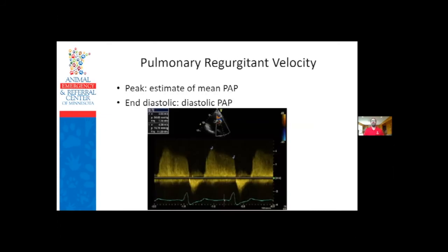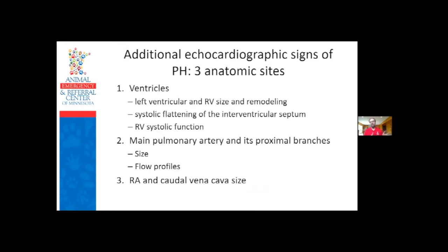In addition to measuring tricuspid regurgitation, you can measure pulmonic regurgitation to estimate diastolic pressures. The peak pulmonic regurgitation velocity reflects mean pulmonary pressure, and the end diastolic velocity is more of an estimate of diastolic pulmonary pressures. Sometimes when there's no tricuspid regurgitation, I'll use these to say I can't diagnose systolic pulmonary hypertension, but I see at least moderate diastolic elevation, so pulmonary hypertension is probably present.